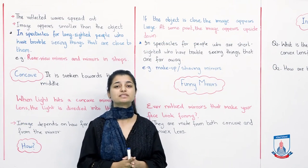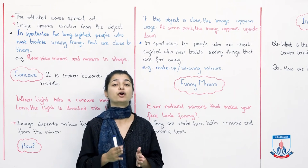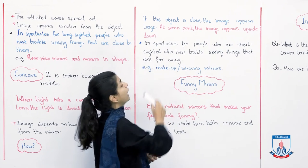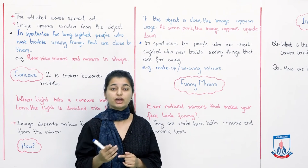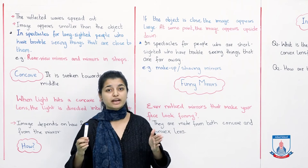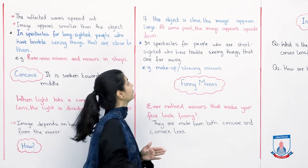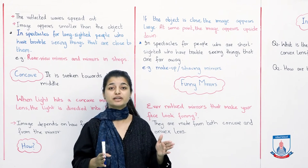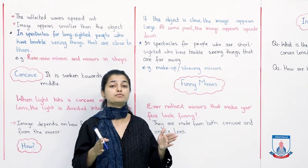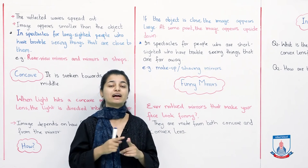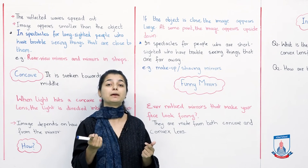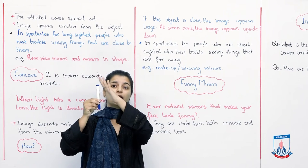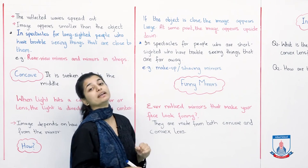So we have it written right here that the image differs based on where the object is. If the object is close, the image appears large. If the object is close to the light source, the image will look bigger. And as the object moves far from the light source, the image will keep on becoming smaller. At some point, the image appears upside down. So that is how a concave lens works.